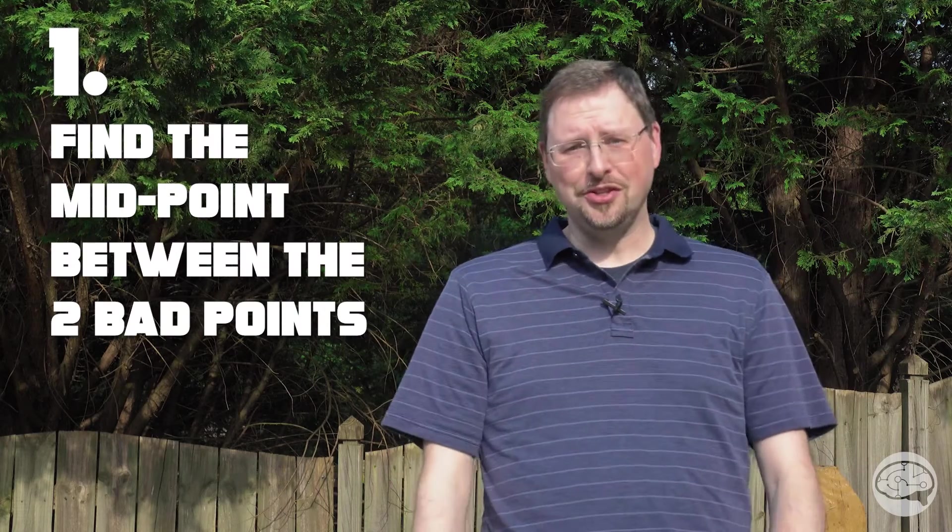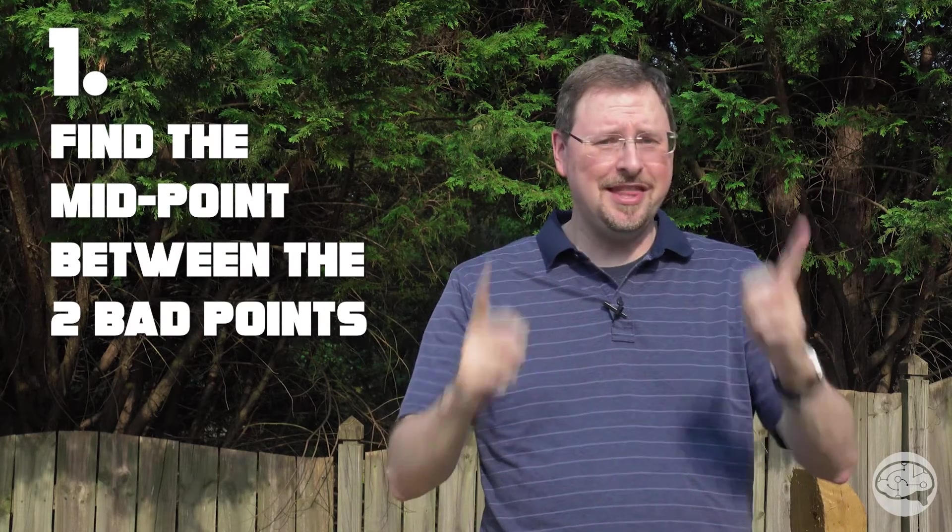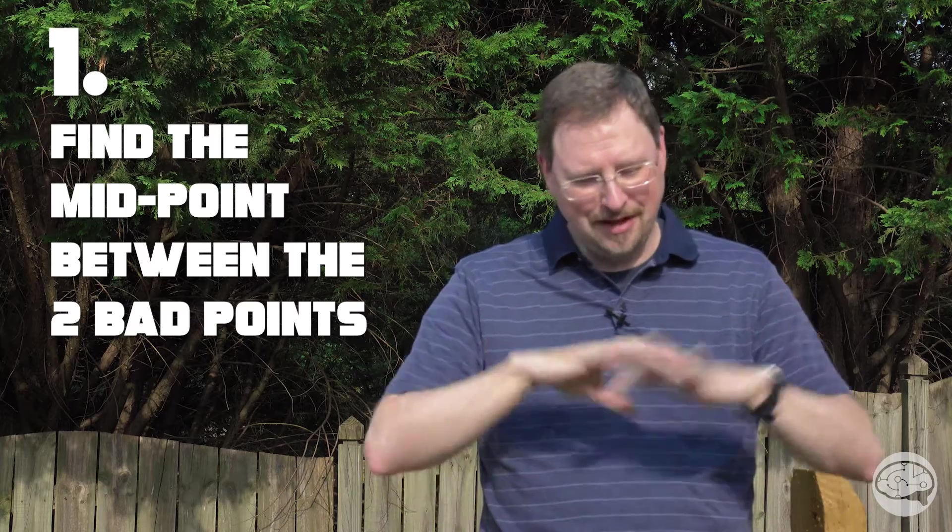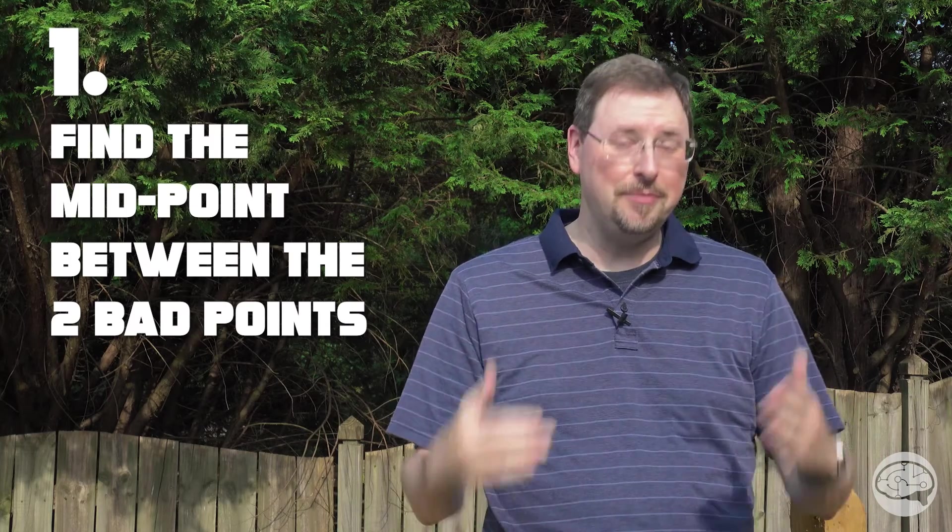So we keep going, we keep going, and now it's bad over here. So if we know that it's bad here, and we know that it's bad here, where is it going to be good at? Well, right in the middle, of course. So that's what we're always trying to find. Not where it's good, but the two points at where things are bad, so we can find the midpoint in between the two. If you can remember that one thing, all of your alignments and adjustments and everything that you do in the electron microscope is going to be much, much easier.